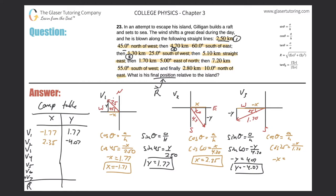Wait — I mistakenly wrote 1.7 instead of 1.3; let me correct that. The magnitude is 1.30, not 1.70. On long problems like this, silly mistakes happen — always check your numbers back against the problem. So cosine of 25° times 1.3 gives 1.18, and x equals negative 1.18. Enter negative 1.18 in the x-column for V3.